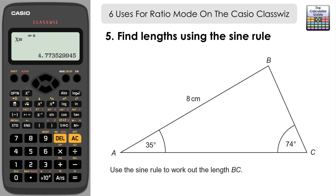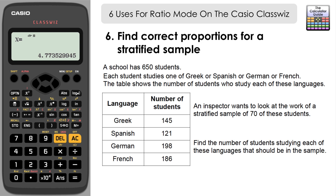Incidentally, ratio mode is not ideal for finding unknown angles, as you'd need inverse sine and similar operations. It's much better to use the Calculate mode with a rearrangement of the rule for unknown angles. Ratio mode is essentially just a shortcut for finding sides.